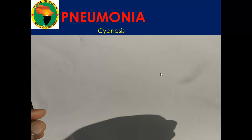Cyanosis is an important sign that will keep coming up, either for blood abnormalities or other respiratory problems. Let us try to understand what it is and how it comes about. Once we understand it, it will help us understand other conditions as well.